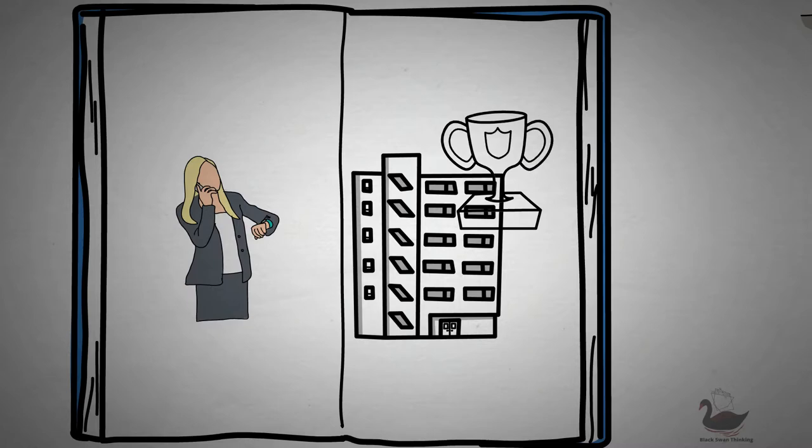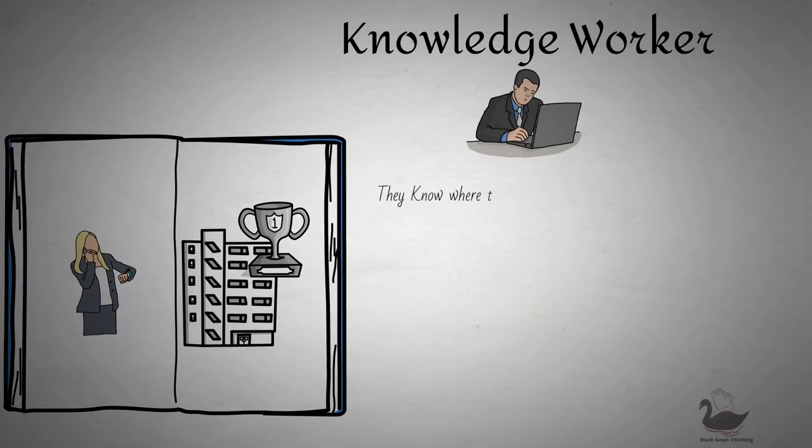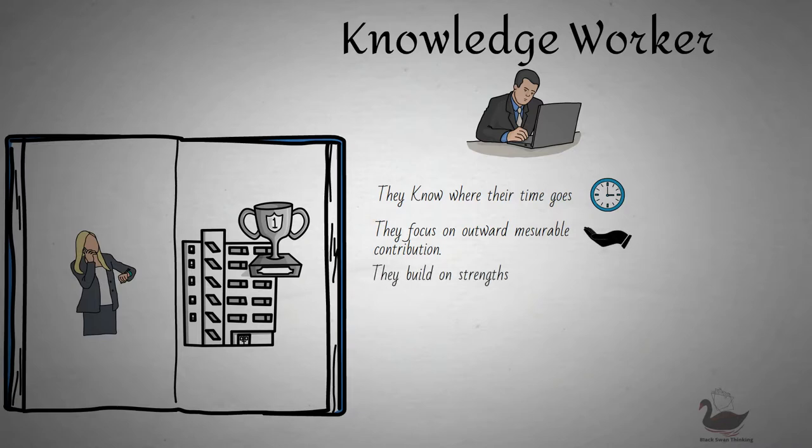Some are effective and some aren't, but all can become effective as there is nothing inherently special in the traits that the effective ones embody. And those are: they know where their time goes, they focus on results and outward measurable contribution, they build on strengths, and they concentrate on very few, very important areas which will make the greatest contribution to the organization in which they serve. And lastly, they make effective decisions.